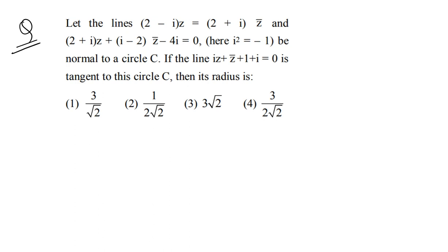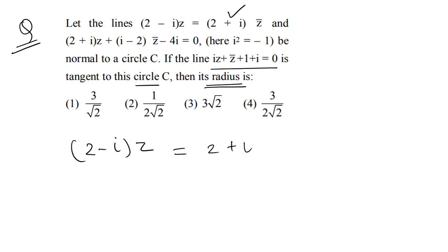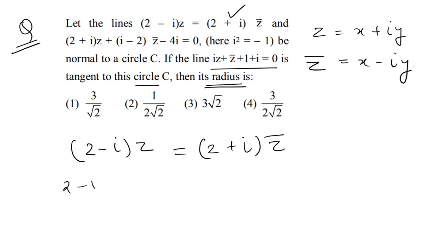If the line is tangent to the circle, then its distance from the center equals the radius. The line equation is: 2 minus i times z equals 2 plus i times z̄. We substitute z = x + iy and z̄ = x - iy (the complex conjugate).